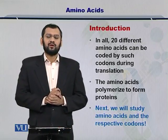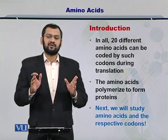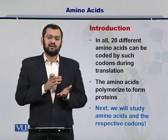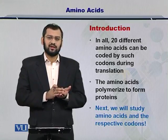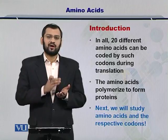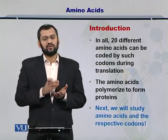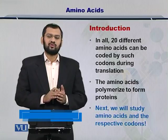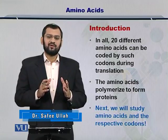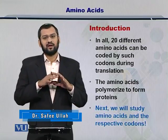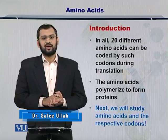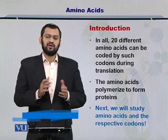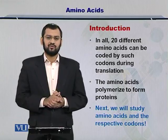In all, there are 20 different amino acids that can be coded by the codons in the RNA. If you have a codon with a different sequence, then it will code for a different amino acid. So in total, there are 20 amino acids, and any combination of the nucleotides arranged into a codon of three nucleotides can code for those amino acids.